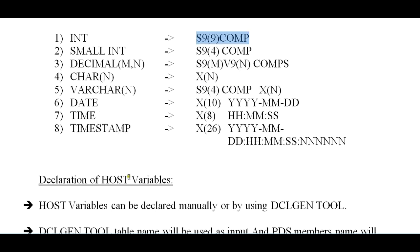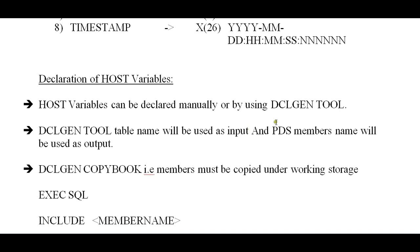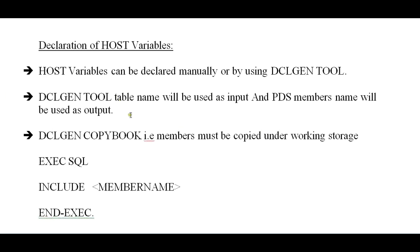So, declaration of host variables. Host variables can be declared manually or by using the DCLGEN tool. We will be looking at both ways — how to declare manually and how to declare using DCLGEN. The DCLGEN tool is very powerful, so it is better practice to use the DCLGEN tool. The DCLGEN tool takes the table name as input and a PDS member name as output.